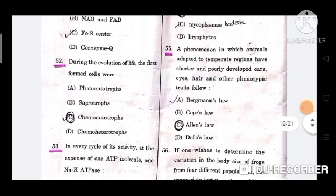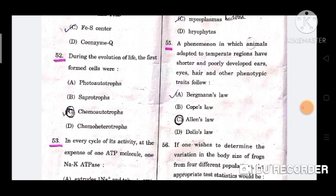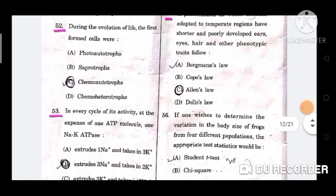Question number 55: A phenomenon in which animals adapted to temperate regions have shorter and poorly developed ears, eyes, hairs and other phenotypic traits follows? Option is C, Allen's law.